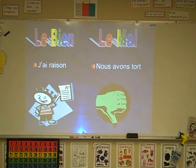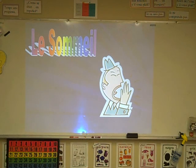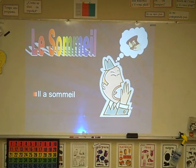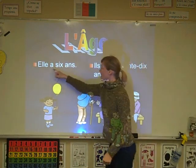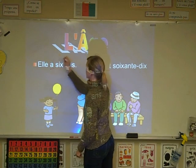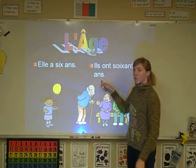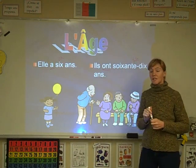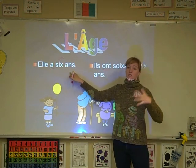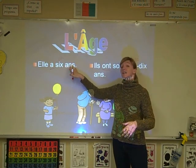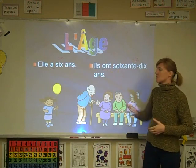Continuons. Sommeil — avoir sommeil. Il a sommeil. L'âge — avoir ans. Par exemple, elle a six ans. Ils ont soixante-dix ans. Notice you have the verb avoir in two different forms, then you have a number, and then you have the word ans. You have to put ans at the end of the sentence in French, unlike in English. Otherwise, it's saying she has six — she has six dogs, she has six friends. So you have to make sure to say what she has: she has six years, they have seventy years. So it's important.